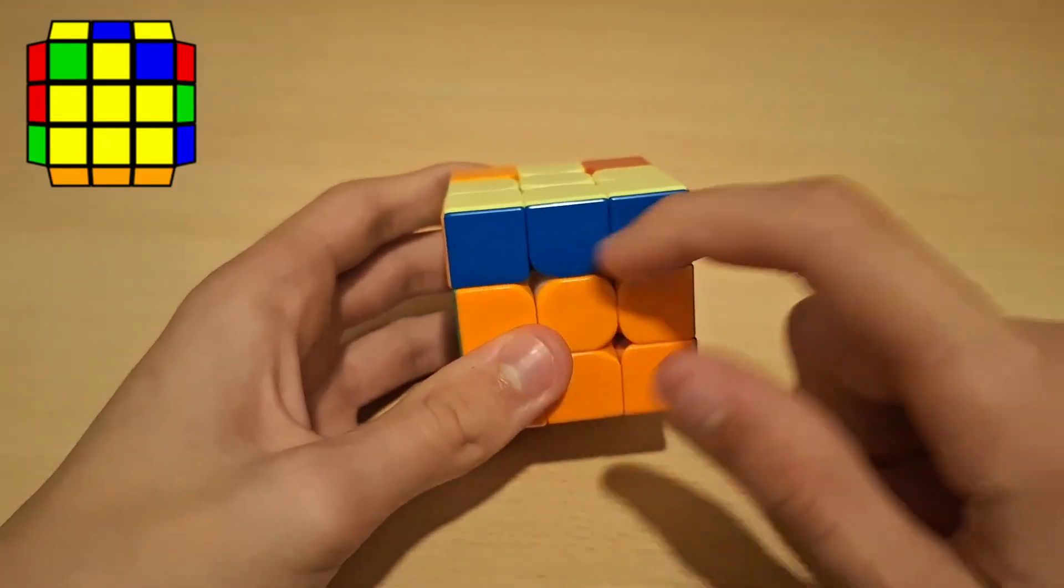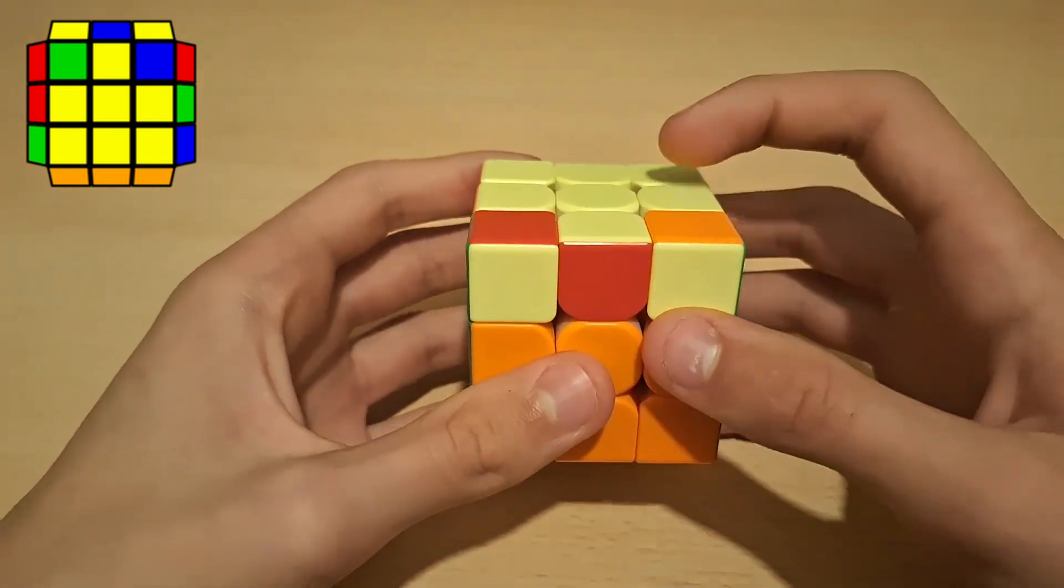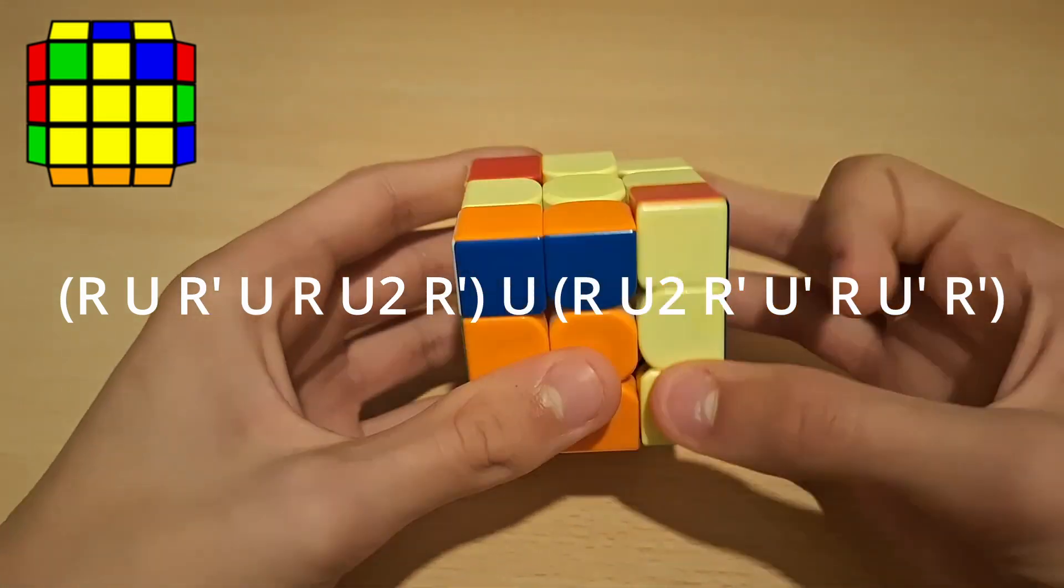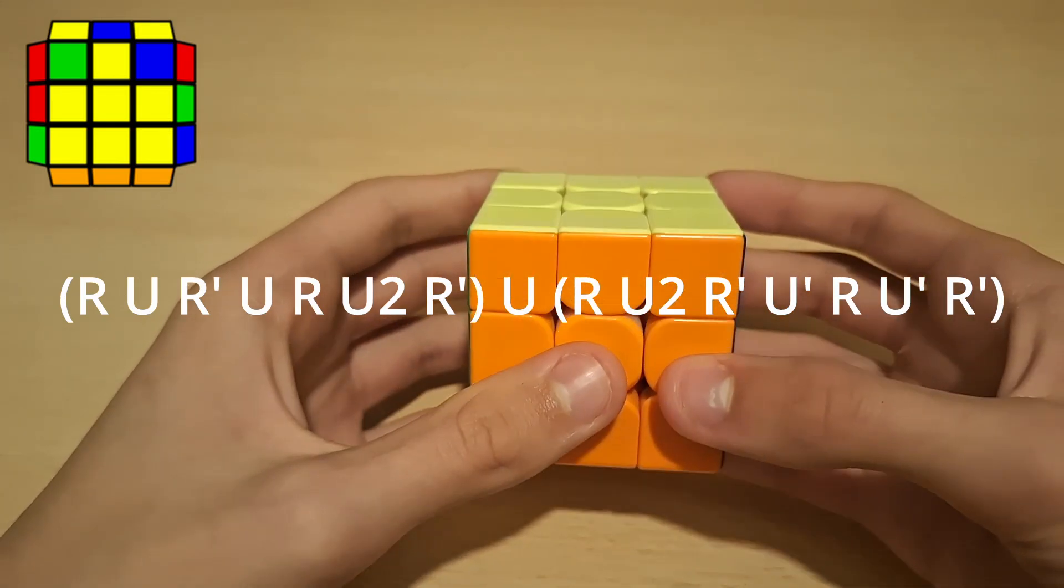And then this ZBLL. So this is the same thing but with the block on the left. So from here I hold it in this angle. And then I do sune into anti-sune from here and that solves ZBLL.